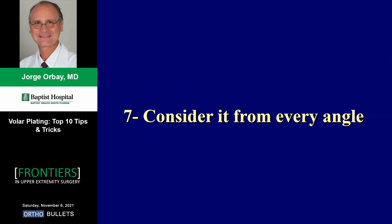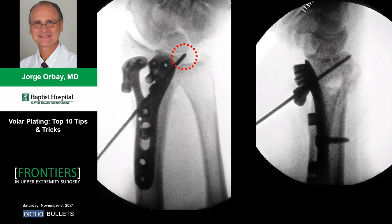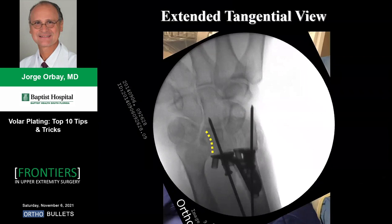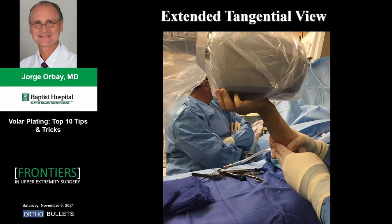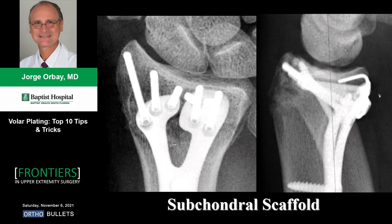Complex fractures can be treated with multiple fixed-angle temporary K-wires, then changed one by one for screws. Consider the fracture from every angle — look at the dorsal ulnar corner, the radial styloid — and try to get a screw at each of these points. Then perform the extended ulnar view to make sure you are not in the DRUJ. This view, invented by Pat Owens from the University of Miami, involves flexing the elbow with the hand in the supinated operating position all the way to the fluoroscopy beam.